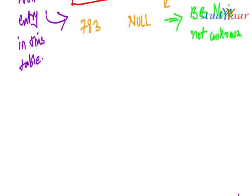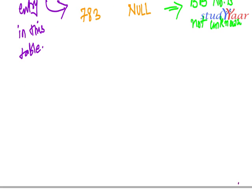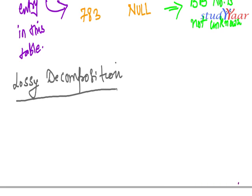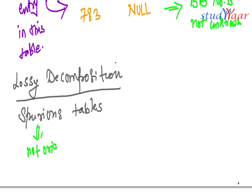Now I'm going to tell you about the next indicator of bad design, and this indicator is lossy decomposition. This is N5: lossy decomposition, or the problem of spurious tuples. Spurious means not original, contaminated, or invalid.